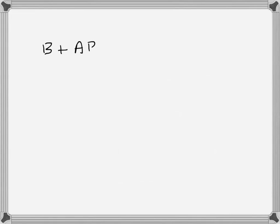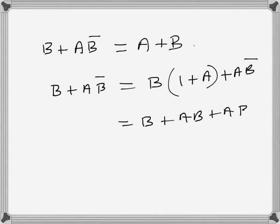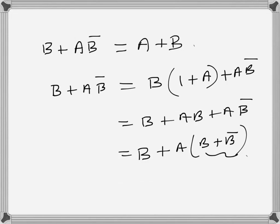Similarly, the dual identity b plus a b-bar is equal to a plus b. Starting from the left-hand side, multiply b with (1 + a), giving b plus ab plus ab-bar. This is b plus a(b plus b-bar). Since b plus b-bar equals 1, this simplifies to a plus b — proving the same identity from the left-hand side.